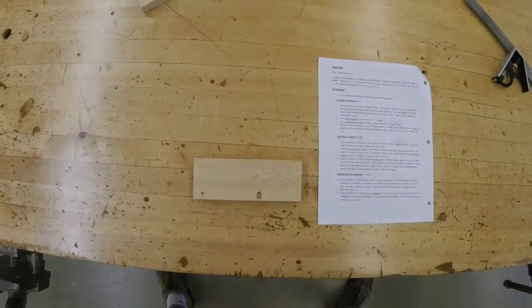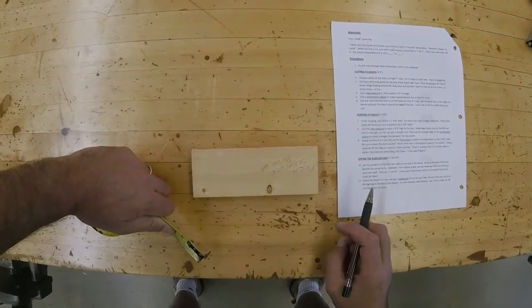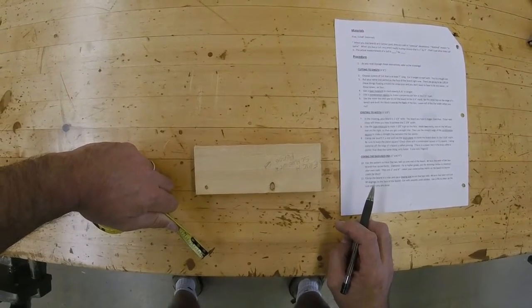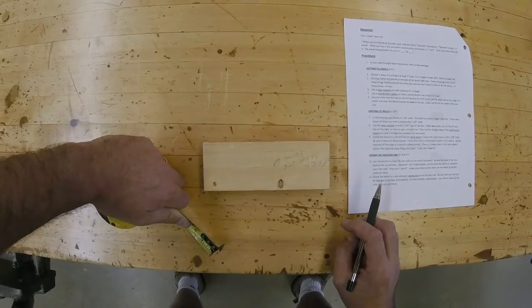Use the tape measure, step eight, to mark two and three-eighths inches on the face. Make two marks, one on the left and one on the right, so that you get a straight line. Then use the straight edge of the combination square to make a straight line between the two points.